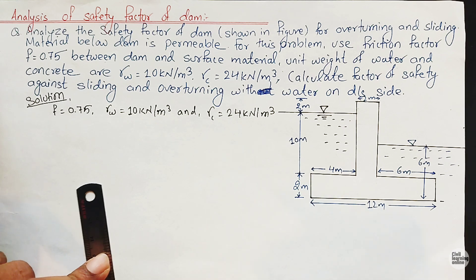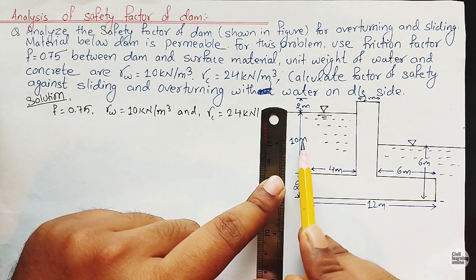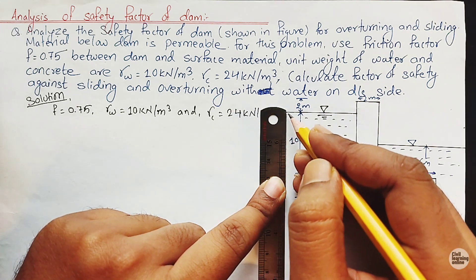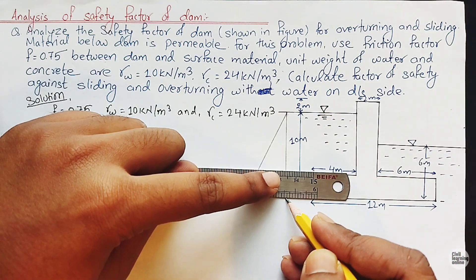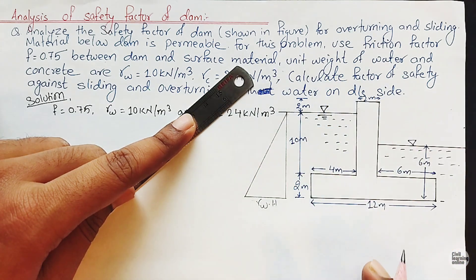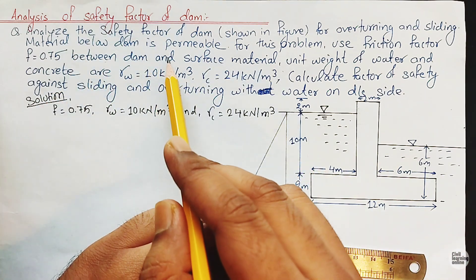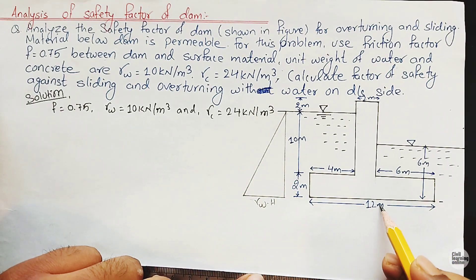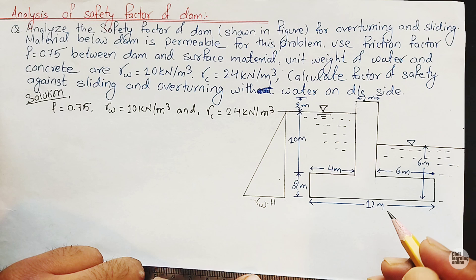Before beginning the solution, we need to draw diagrams for the hydraulic pressure. The water on the upstream side poses both horizontal and vertical pressure. For vertical pressure, it is due to the height of the liquid column, so we have gamma_w times the depth of water on the upstream side. Also, since the material below the dam is permeable, water seeps below the dam from the upstream side to the downstream side due to the difference in pressure.